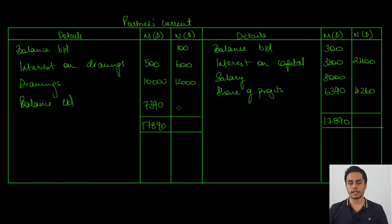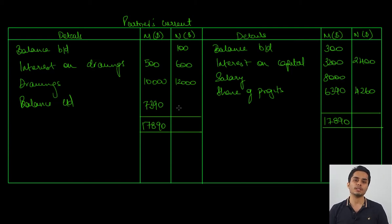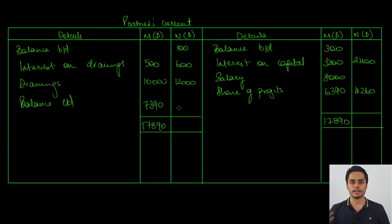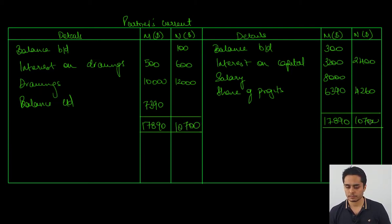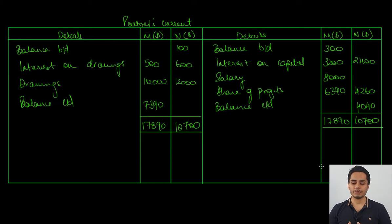For N, the credit side comes to 6,660 while the debit side is higher at 12,700, so the debit side is greater. This means N holds a debit balance in the current account. We take a total on the debit side and write the balance carried down on the credit side. N holds a debit balance in the current account of 4,040.